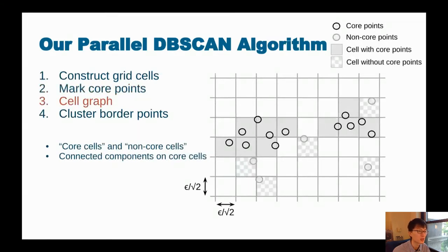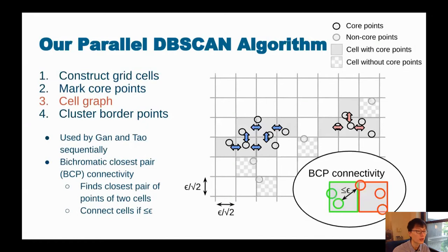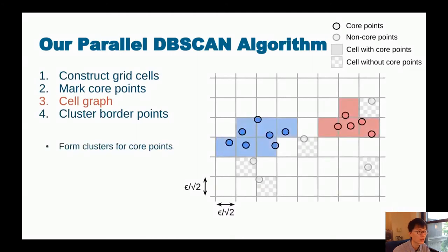We have all the core points. Now we want to determine the connectivities. Rather than doing the connectivity among the points, we do it among the cells. We use a parallel bichromatic closest pair algorithm on any two cells. And if their closest pair of core points is within epsilon to each other, we connect the cells. And the core points inside each cell must already be connected because they are already within epsilon to each other. With the connectivity for the cells, we also get connectivity for the core points. So we get our initial clusters.